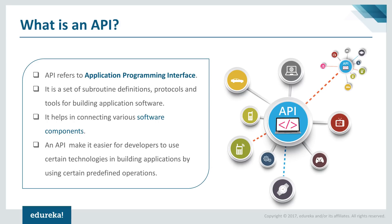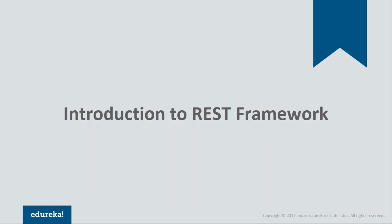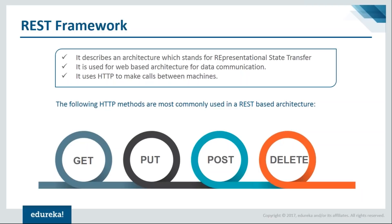Let's move to our next topic: an introduction to REST Framework. REST describes an architecture which stands for Representational State Transfer. It is used for web APIs for data communication and supports common HTTP methods to make interaction between machines or applications. Some of the HTTP methods commonly used in REST architecture are GET, PUT, POST, and DELETE. GET is used to retrieve a resource. PUT is used to update a resource — a file, object, or any block. POST is used to create a resource, and DELETE is used to remove that resource.